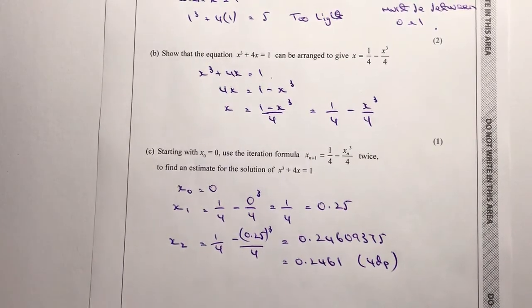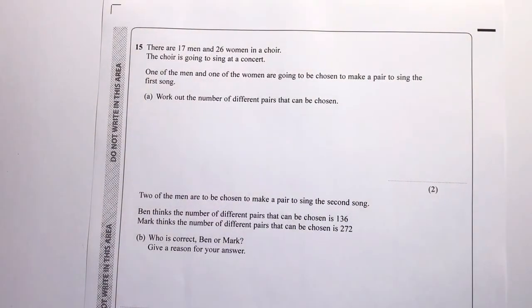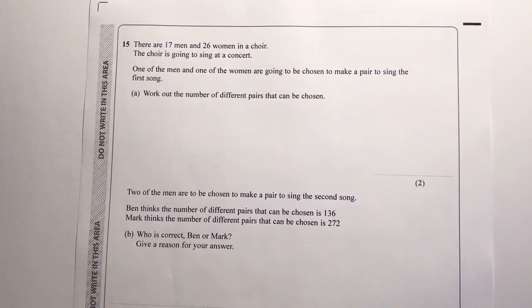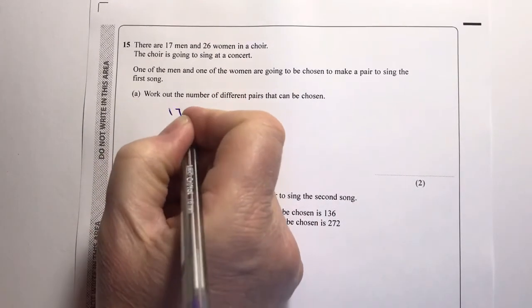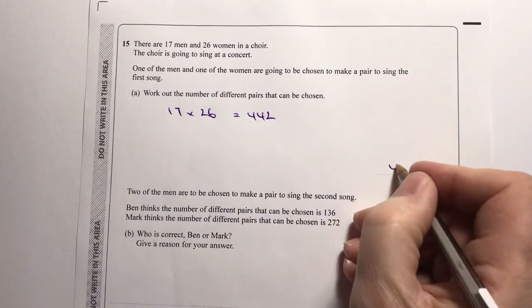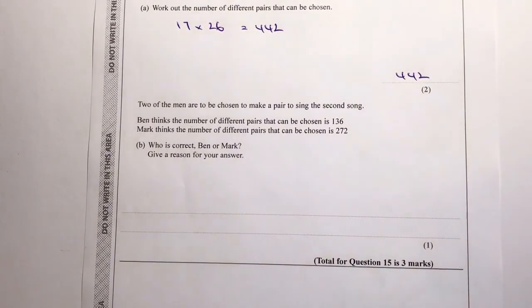I'm aware of time, so after this question we'll stop the video and pick up from question 16 in the next video. Question 15: there are 17 men and 26 women in a choir. One man and one woman are chosen to make a pair to sing the first song. The number of different pairs is 17 × 26 = 442.